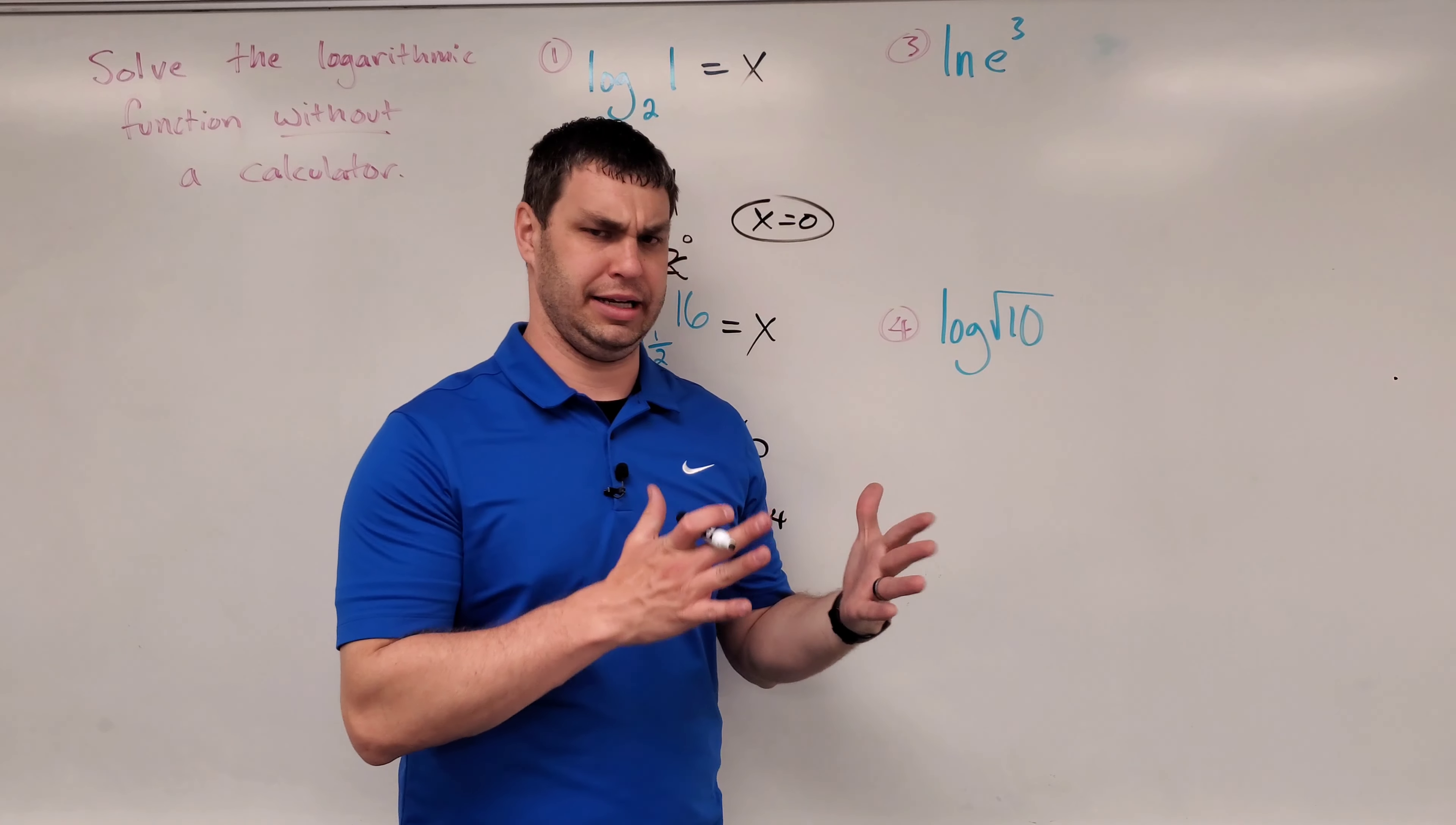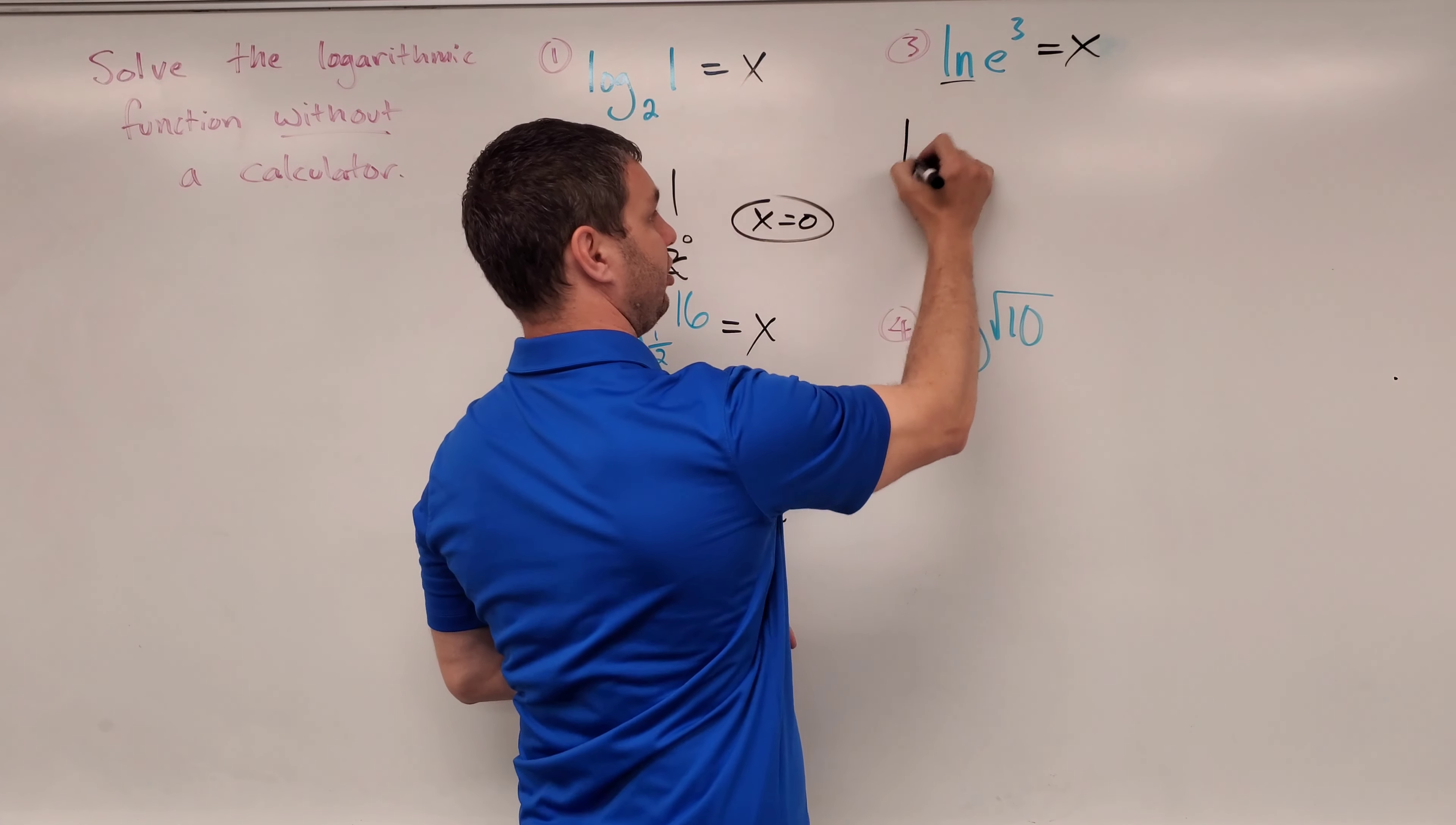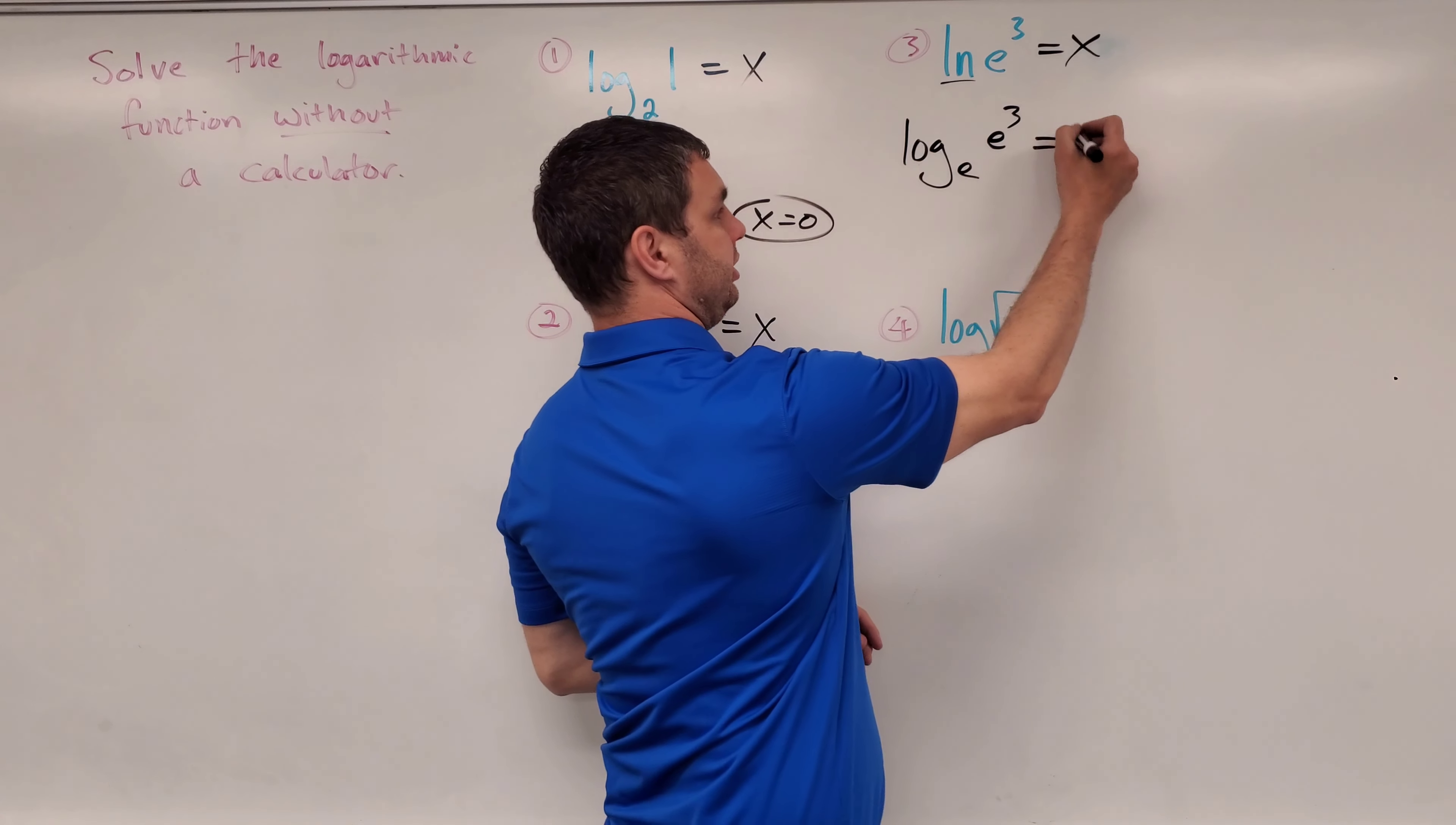What about a natural log, or ln, is what you might see if you have your calculator. But we're not supposed to do these with our calculator. So it says natural log of e to the 3rd equals what? Equals x. So you have to remember that the natural log is actually log base e. I'm going to write that down instead of the natural log. I'm going to say log base e of e to the 3rd, which that's the same thing as log base e of e to the 3rd equals x.